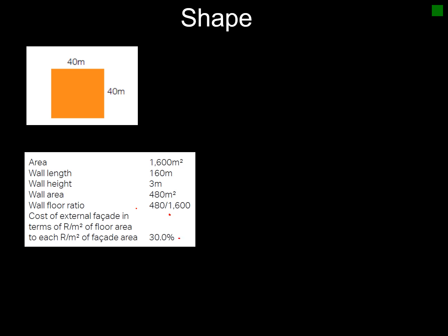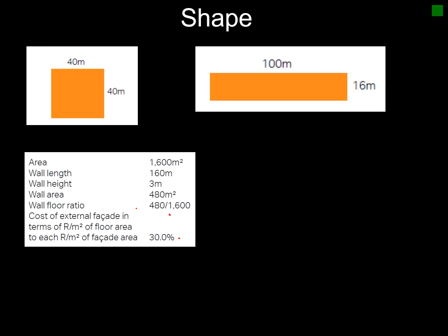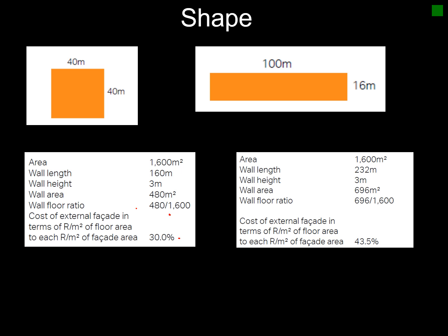Looking at the second scenario, you've got 100 by 16 meters, which is the same area when you calculate it. Your area is the same, but your wall length is now 232 meters. The height still stays the same, and your wall area now goes up to 696 square meters. Dividing that by your floor area gives a cost ratio of 43.5 percent.